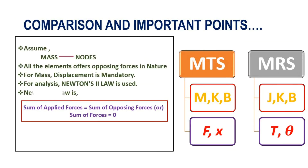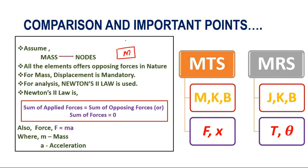Some important assumptions: in all systems, mass is considered as the node and plays an important role. All elements in nature offer an opposing force, and if there is a mass, there must be a displacement. For analysis of the system we use Newton's second law: sum of applied forces is equal to sum of opposing forces, or the total sum of forces in the system is equal to zero. Also, force is equal to mass into acceleration.